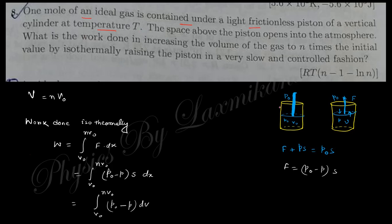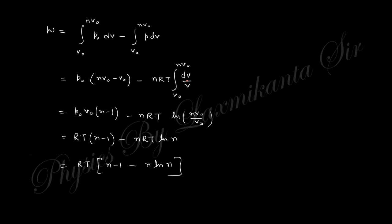One mole of ideal gas is confined under a light frictionless piston in a vertical cylinder at temperature T; the space above the piston is open to the atmosphere at pressure P₀. The volume increases to n times the initial volume V₀. Work done equals the integral from V₀ to nV₀ of (P - P₀)dS·dx. Since P = nRT/V and S·dx = dV, the integration gives the work done.